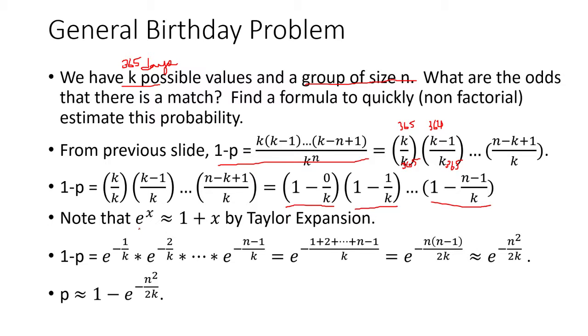And we can recall that e to the x is approximately 1 plus x by using a Taylor expansion. So that means the probability can be expressed as follows. So e to the minus 1 over k times e to the minus 2 over k, etc., all the way down to e to the minus n minus 1 over k. And remember that if we multiply exponentials, we can add the exponents if they have the same base. So that leaves us with this expression here. And notice that we can express this summation as a product using our triangle sum that we've covered earlier.